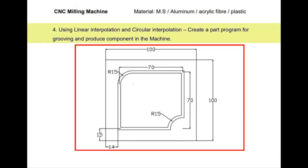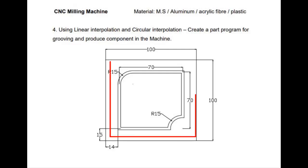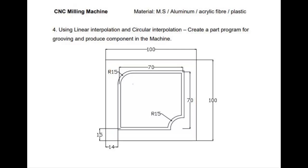For CNC milling, the first exercise uses linear interpolation and circular interpolation to create a part program for grooving and produce the component on the machine. This is a profile milling operation using G01 and G02 for clockwise and counterclockwise profile milling.